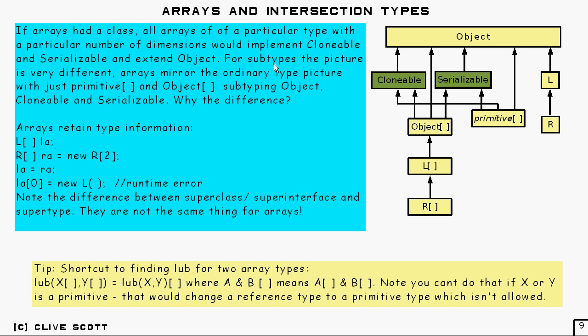And for subtypes, of course, in terms of assignment compatibility, it's an exact mirror image of the ordinary type picture. So you take the ordinary picture for types, you put a pair of brackets after everything on the picture, and you get the same picture for arrays.